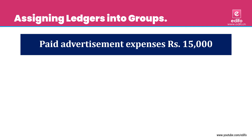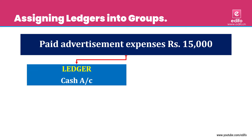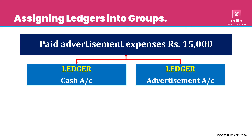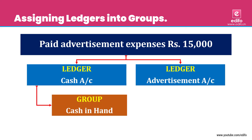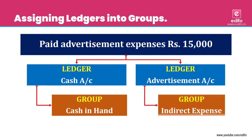Next transaction: paid advertisement expense for Rs. 15,000. There is an outflow of cash. Two aspects: cash account and advertisement expense account. Cash belongs to 'Cash in Hand' and advertisement belongs to 'Indirect Expense' group.